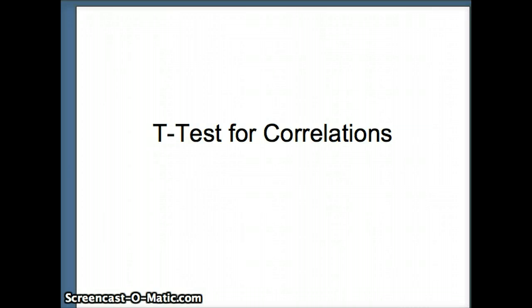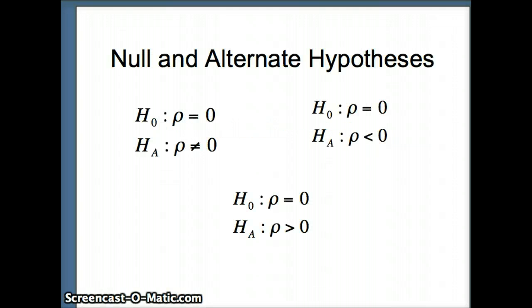This presentation examines the t-test for correlations. Here are our null and alternate hypotheses: H0 rho equals 0 versus HA rho does not equal 0.